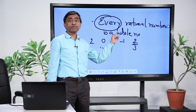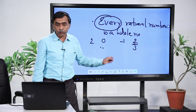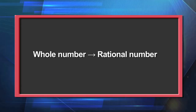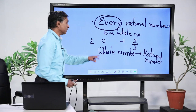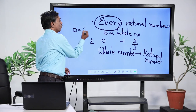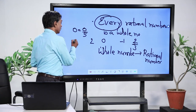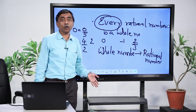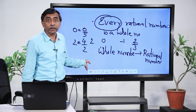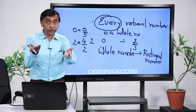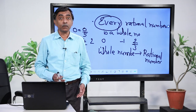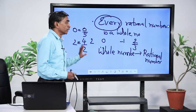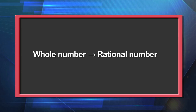Can you say the other way around — that every whole number is a rational number? If I take 0, I can write it as 0/5, which is a rational number. If I take 2, I can write it as 4/2 or 6/3 or 8/4 — all in rational number form because numerator and denominator are both integers and denominator is not zero. So every whole number, whatever you take, is a rational number. That statement is true.